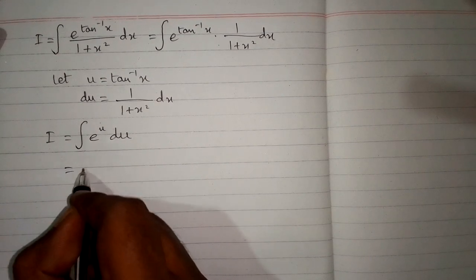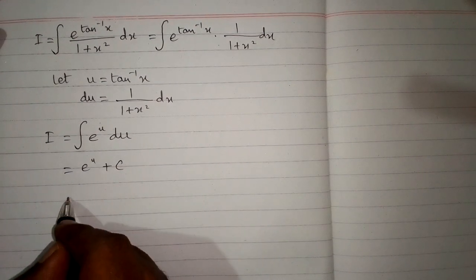We know that the integral of e to the power u is e to the power u plus c, where c is the constant of integration.